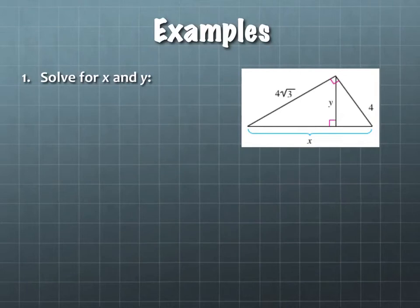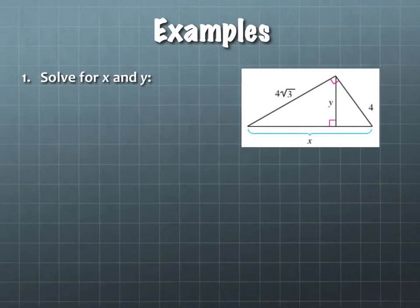This triangle is interesting because it is interconnected to be multiple triangles that are all right triangles. How many right triangles do you see? There are three: the bigger outer one, then one on the left and one on the right. The one on the right is not actually marked, but it's a 90-degree angle as well. So we can utilize the Pythagorean Theorem on this triangle in multiple ways depending on which of the three triangles we're looking at.